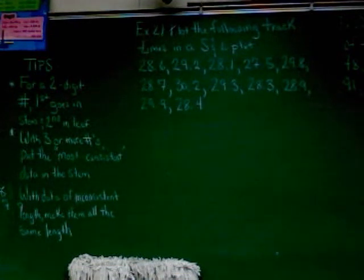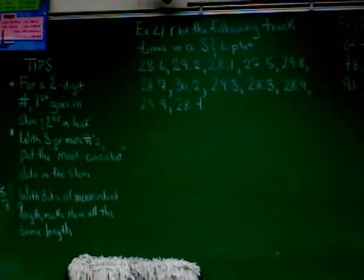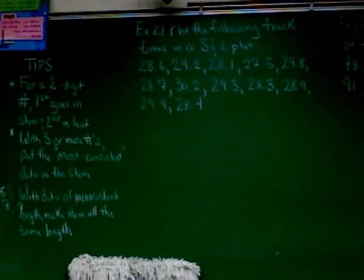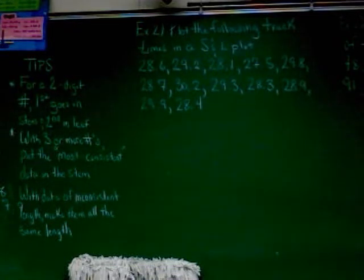Also, with data of inconsistent length, make them all the same length. What do I mean by inconsistent length? I mean you have a list of two-digit numbers and all of a sudden there are a couple of three-digit numbers. If that happens, even them out — make the two-digit numbers into three-digit numbers. Obviously, the best way to do that is to stick a zero in front. That would be your best course of action.